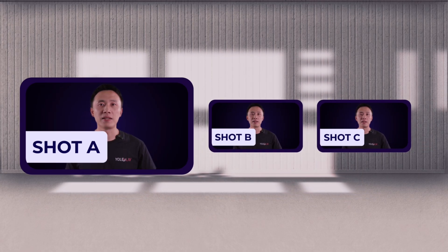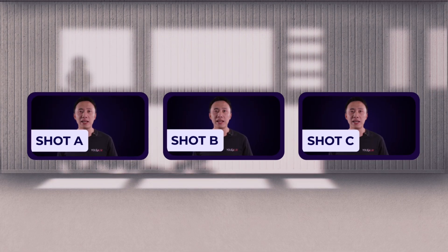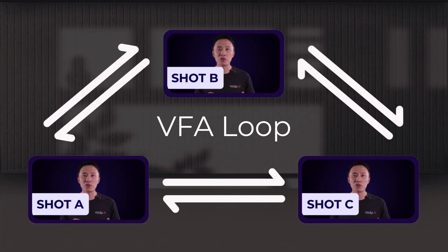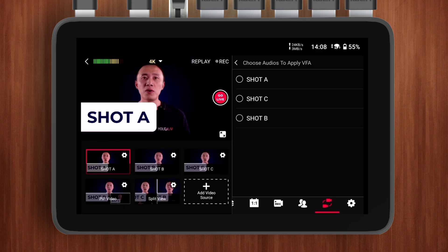Now let's talk about the most important parameter: threshold. Before diving in, let's understand the concepts of condition and action. There are three video sources: Shot A, Shot B, and Shot C. To set up VFA loop between these three sources, the first step is to select these three audio sources.